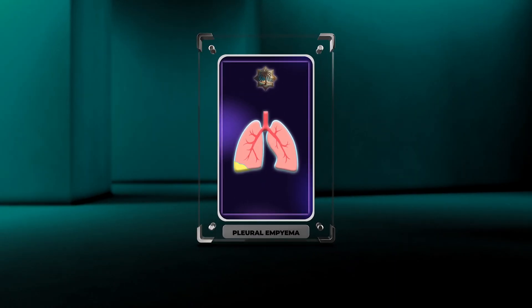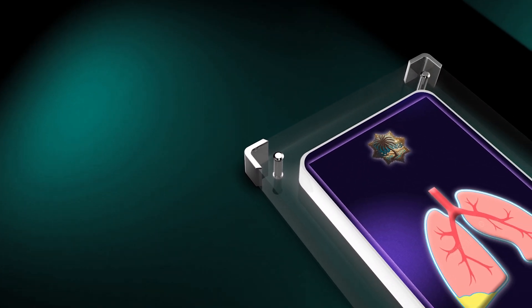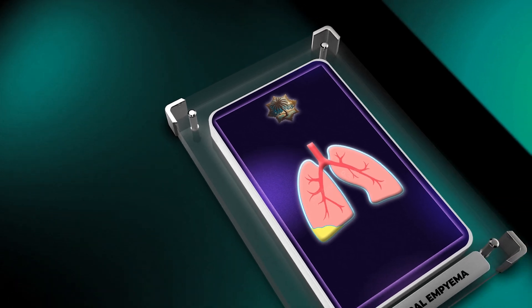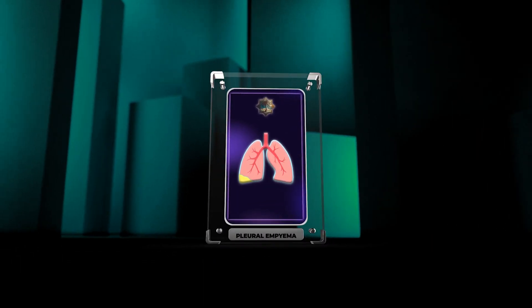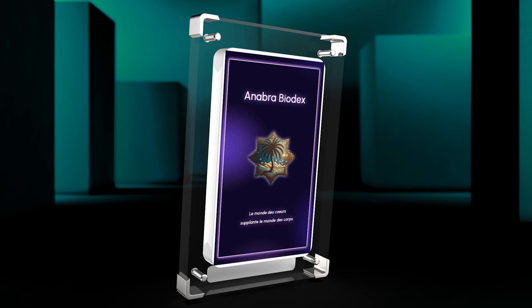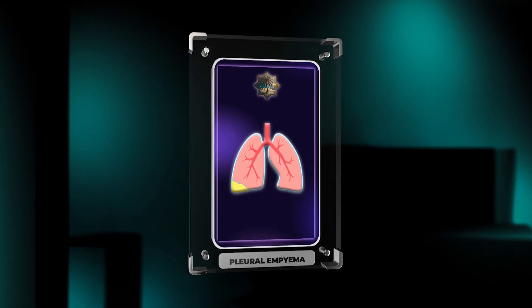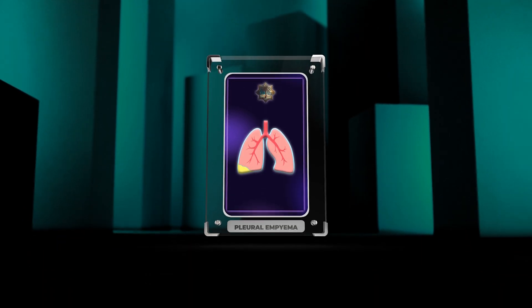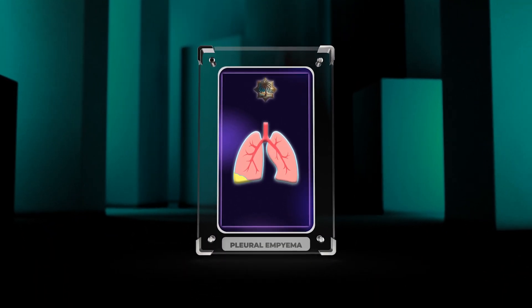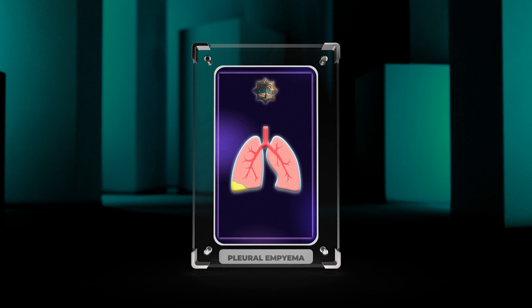Pleural empyema is a serious condition characterized by the accumulation of pus in the pleural cavity, the space between the lungs and the chest wall. It is usually a complication of another underlying condition such as pneumonia, lung abscess, or thoracic trauma. This script aims to provide a comprehensive understanding of pleural empyema including its etiology, microbiology, pathophysiology, and clinical presentation.